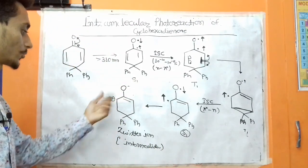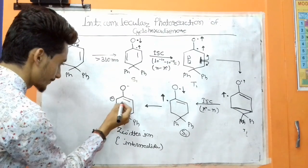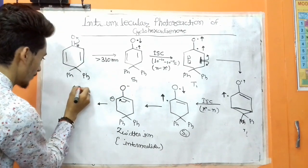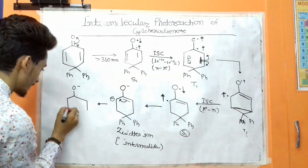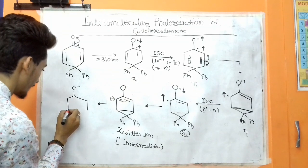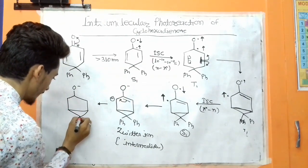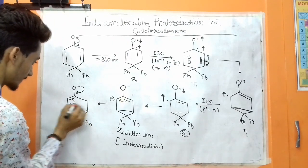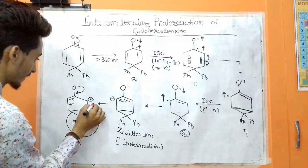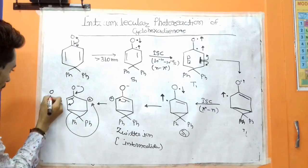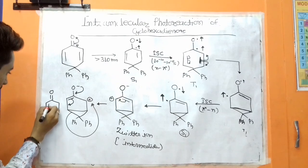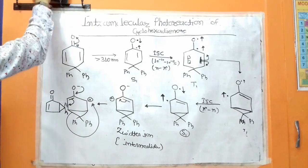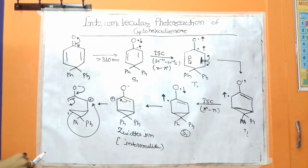This zwitterion intermediate undergoes rearrangement to form the final product. This bond migrates over here, there is an O-minus, and there is a double bond. When the electrons migrate, we get the final product with a C=O double bond and benzene ring with phenyl groups.